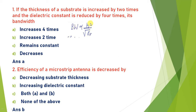If we increase the width by two times, we put 2h in place of h. The dielectric constant is reduced by four times, so epsilon_r is replaced by epsilon_r divided by four. We get new bandwidth BW2. BW2 divided by BW1 equals four, meaning the new bandwidth is four times the previous bandwidth. So the answer is A.